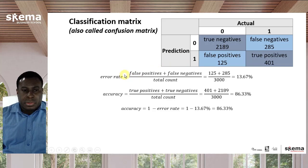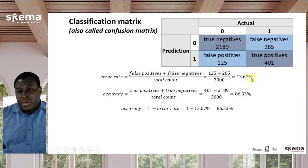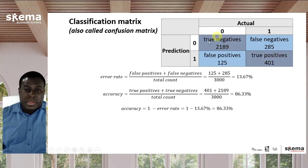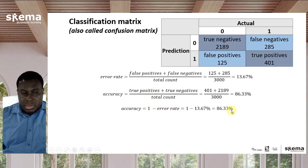The error rate counts all the wrong guesses — the false positives plus the false negatives divided by everything. With 3,000 instances, 125 false positives and 285 false negatives divided by 3,000 gives an error rate of 13.67%. The accuracy on the other hand counts the percentage of correct guesses — true negatives plus true positives divided by the total 3,000 — giving 86.33%. Mathematically, the accuracy is one minus the error rate and the error rate is one minus the accuracy, as you can see here.